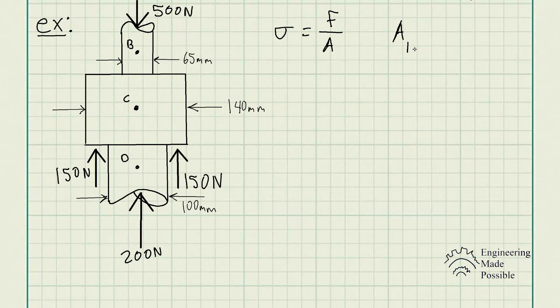For the cross sectional area for B, we have pi r squared, or we could do pi over 4 times the diameter squared. In this case, the diameter is going to be 65 millimeters, but I'm going to convert it to meters, which is 0.065 meters. And so, we just square and divide it by 4. So, we have 0.003318 meters squared.